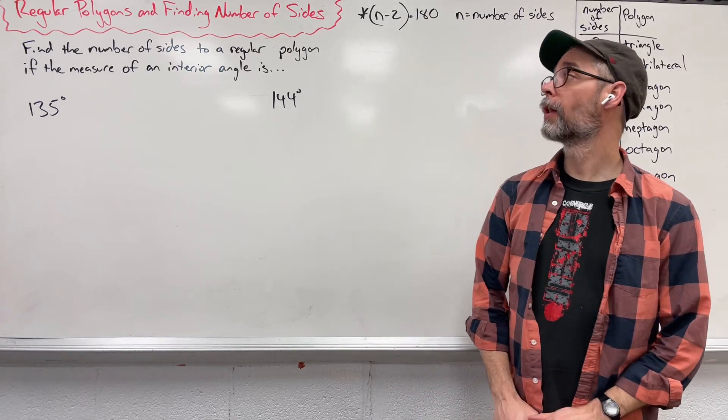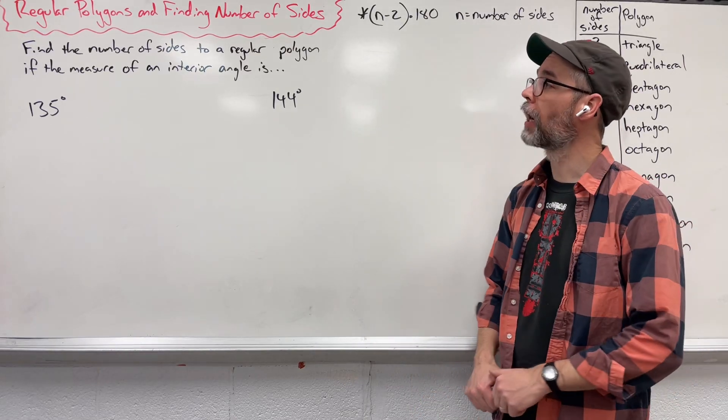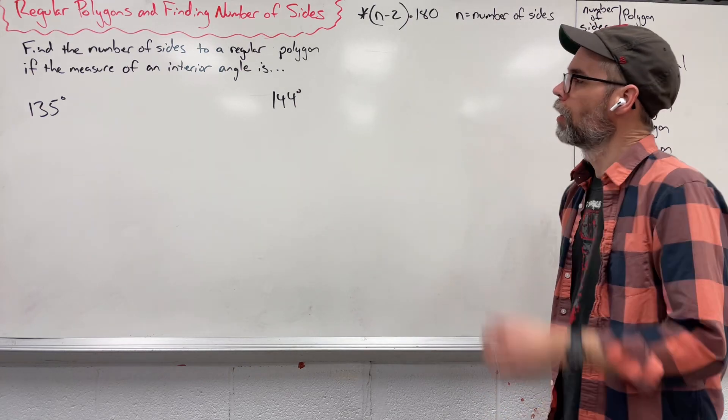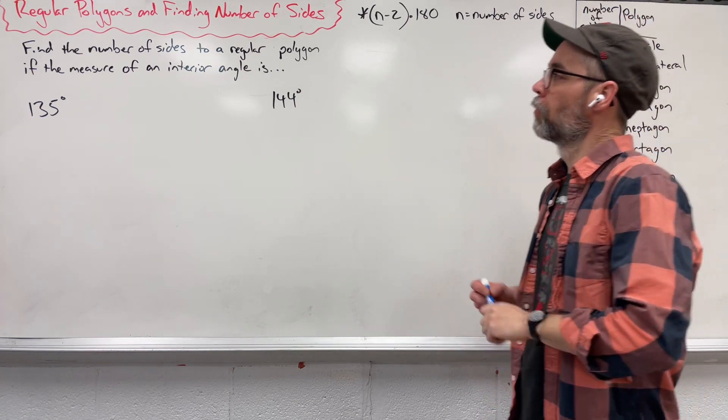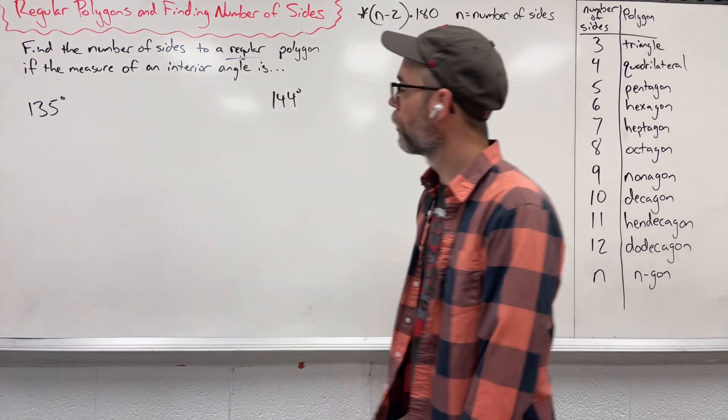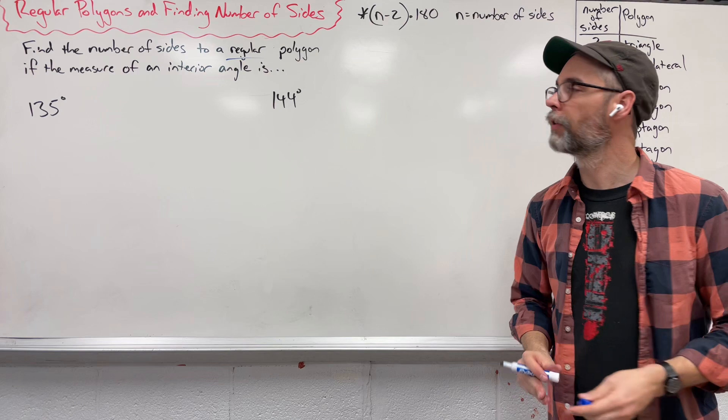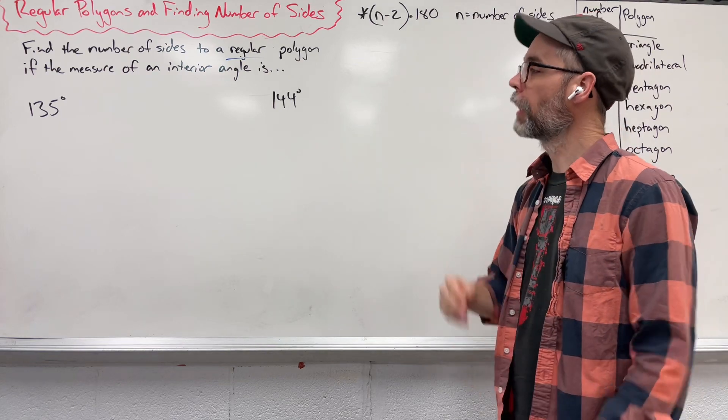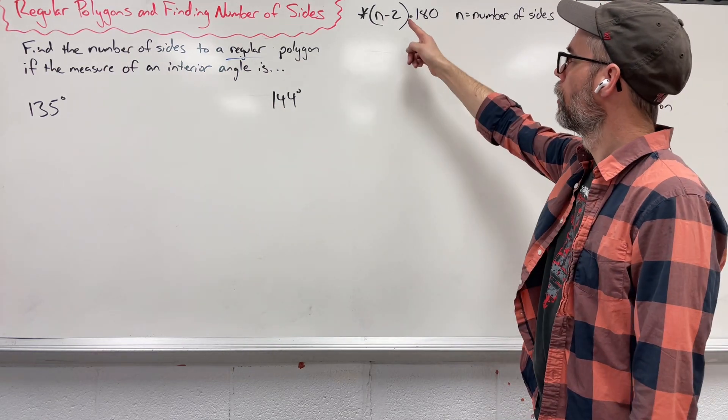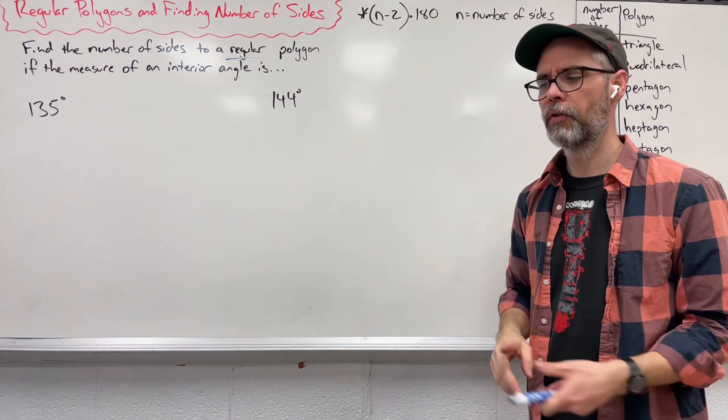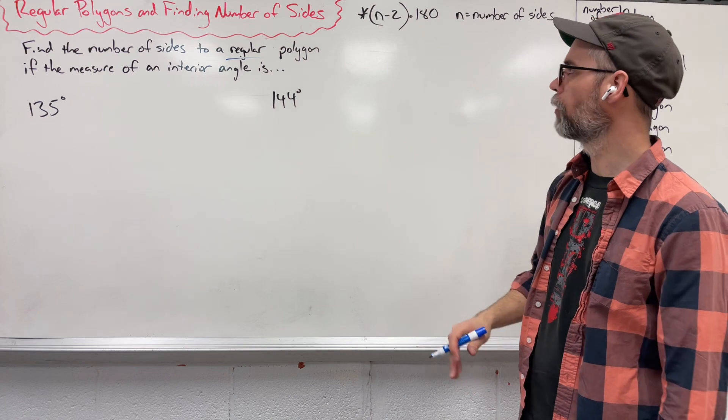Hi, today we're going to take a look at regular polygons and finding the number of sides within it given just the measure of one angle. So we know that regular polygons, the word regular means all the sides, all the angles are exactly the same within that figure. We're given one measurement and we're given a formula that helps us find all the angles within that, the measure of all the angles.